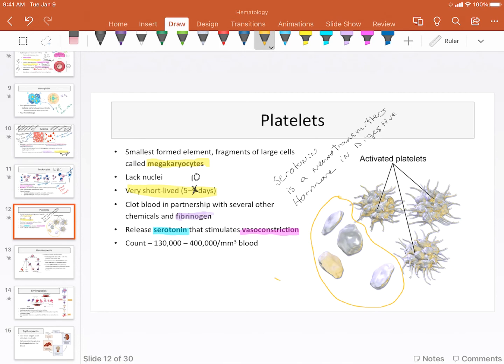But inactive platelets float freely in the bloodstream. Now, when they encounter an injured area, and in particular they're activated by collagen. More on that in a minute. These platelets become activated and they become very sticky. Sticky, sticky. And spiky.